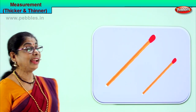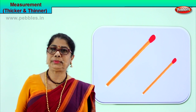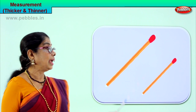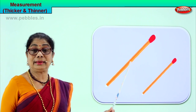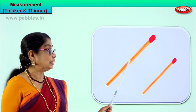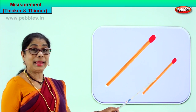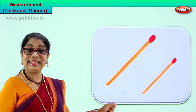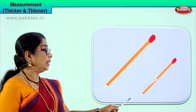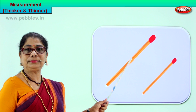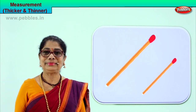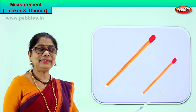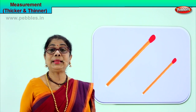Look at the picture. We have two matchsticks here. This matchstick is very thin and this matchstick is thick. We say this matchstick is thicker than this matchstick. Or, this matchstick is thinner than this matchstick. Thicker, thinner. You understood now what is thicker and thinner? Let's go to another picture.